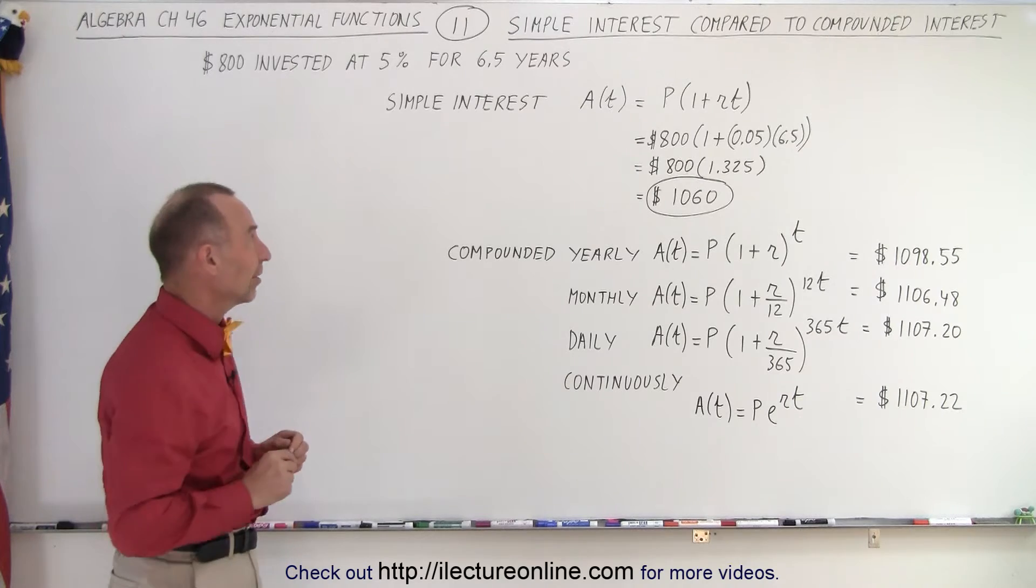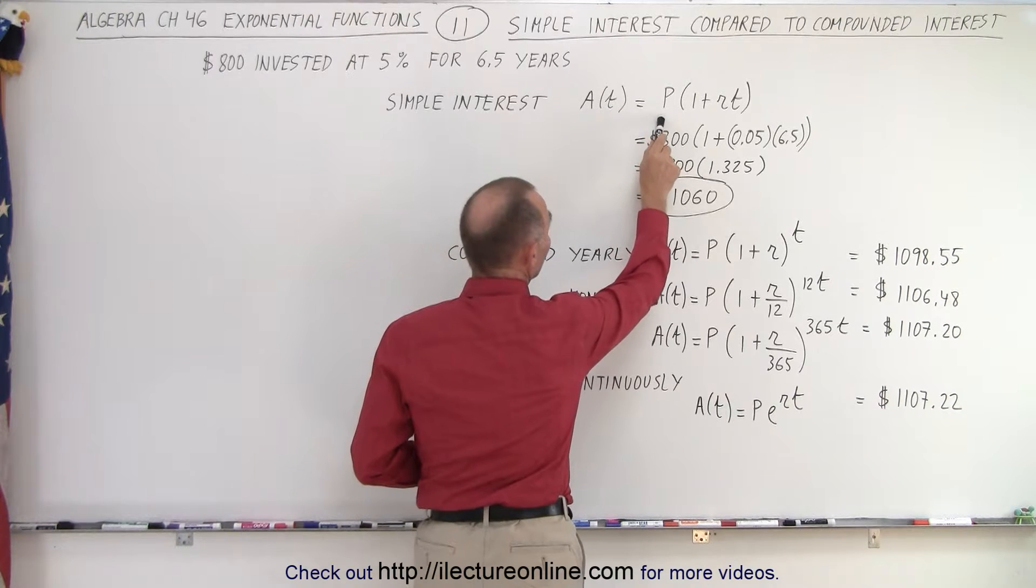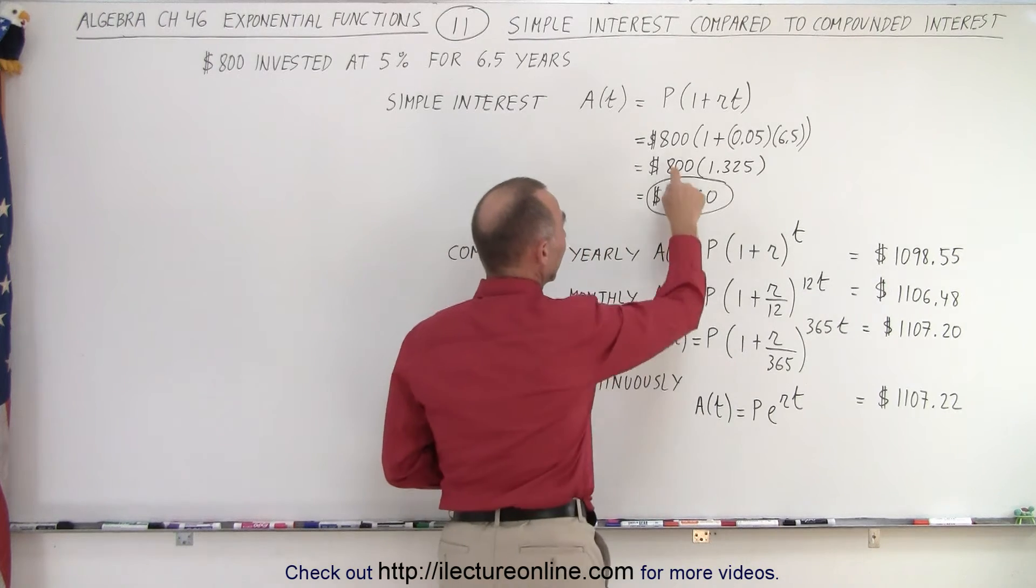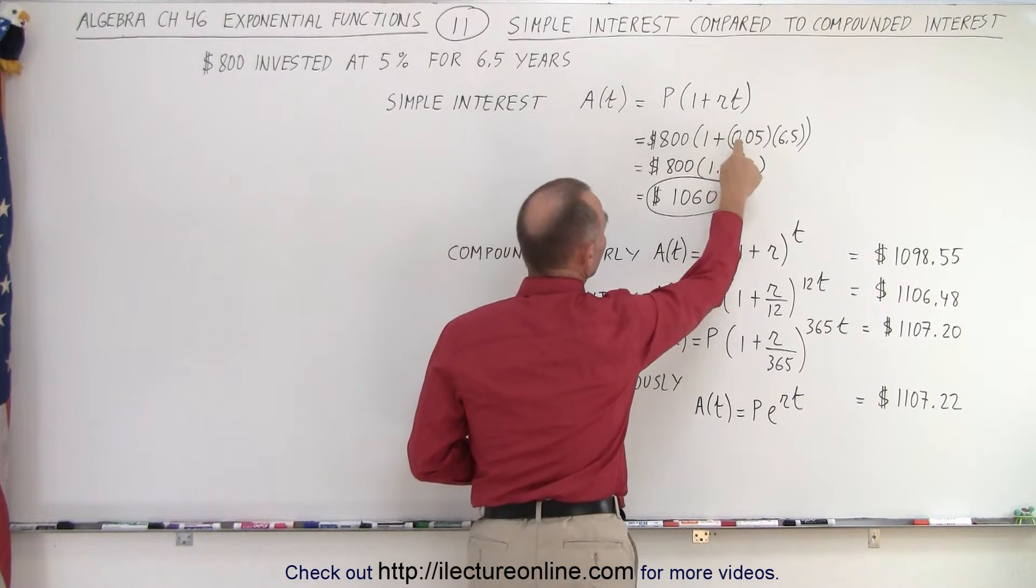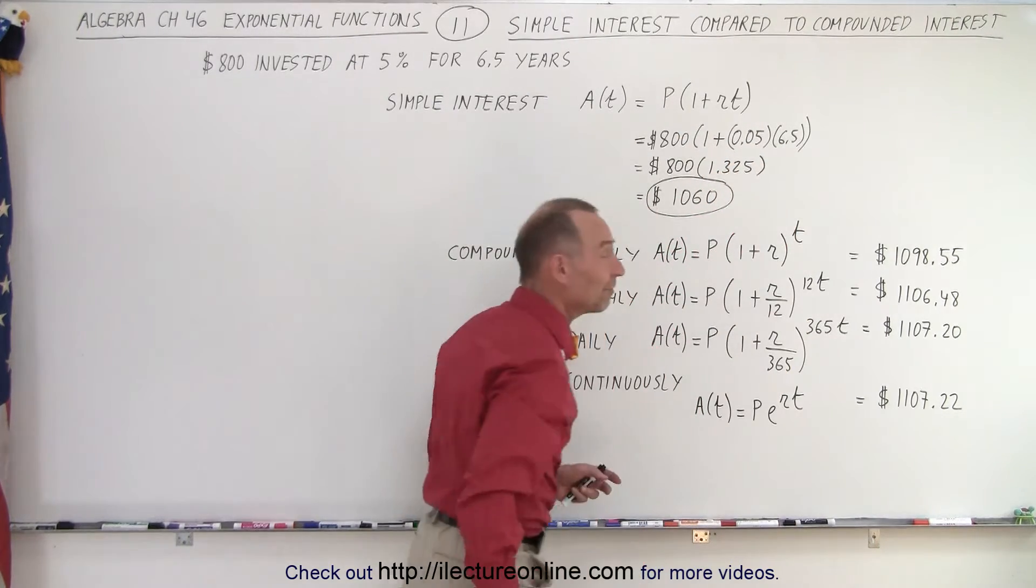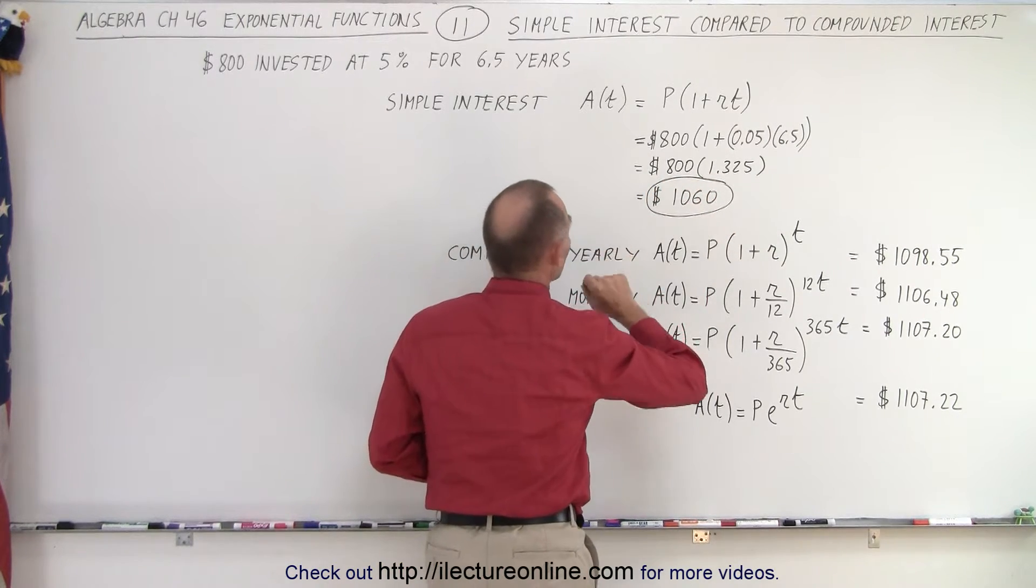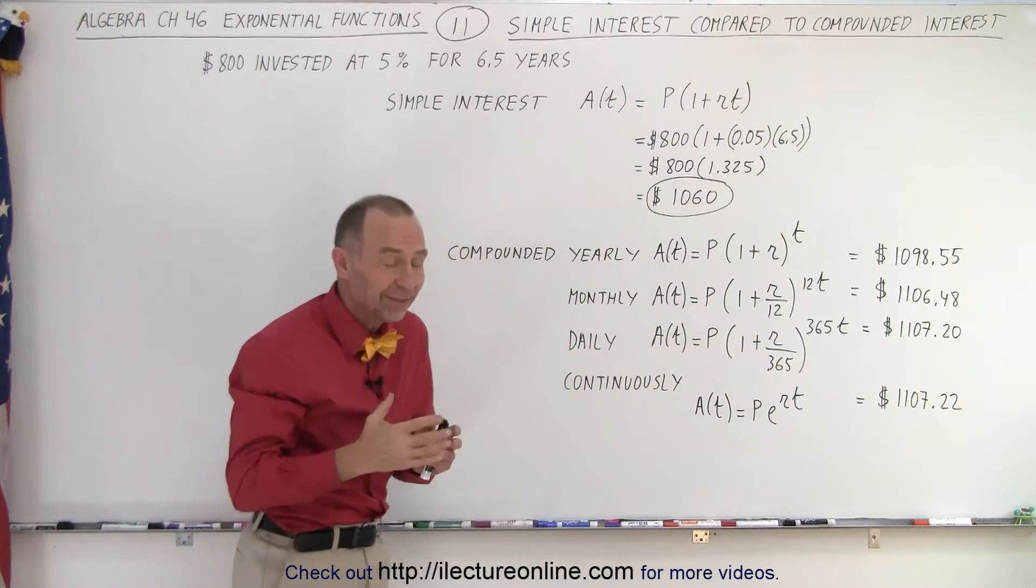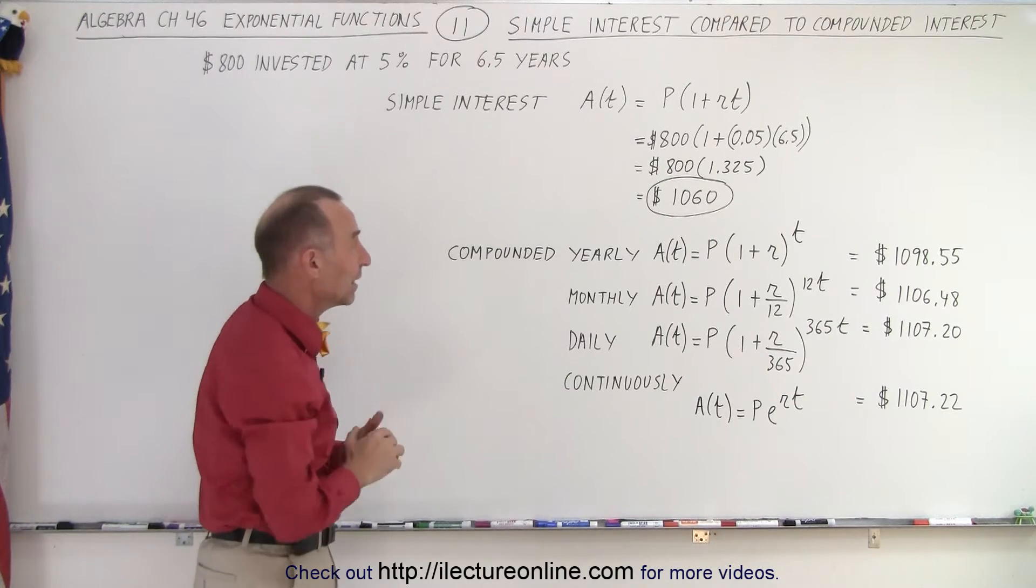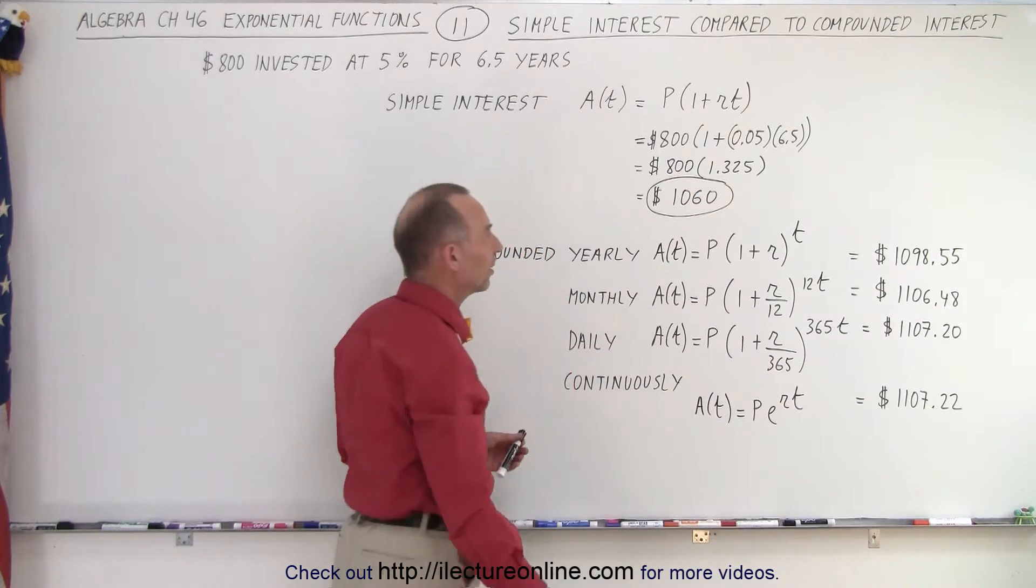So first, simple interest. We haven't seen this one yet, but the amount that we end up with after two years is equal to the principal, multiply it times 1 plus the rate times the time. So in this case, it's $800 invested, 1 plus the rate, which is 0.05, that's 5% converted to a decimal, times 6.5 years. So it's essentially $800 times 1.325, which is $1,060. So simple interest means that after 6.5 years, they simply calculate 5% times 6.5 years and they add the interest to that. So we've earned $260 worth of interest on the $800 investment.